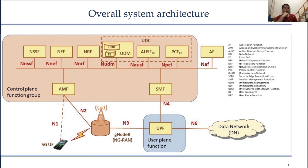The 5G core network, in return, is responsible for functions not related to radio access but needed for providing a complete network. This includes, for example, authentication, charging functionality, and setup of end-to-end connections. Handling these functions separately, instead of integrating them into the RAN, is beneficial as it allows several radio access technologies to be served by the same core network.